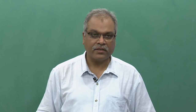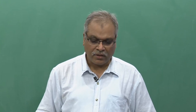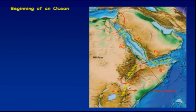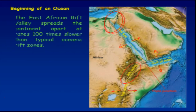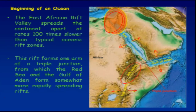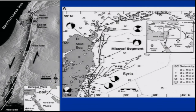Now let us move ahead and talk about what exactly is happening in the Dead Sea region because of the triple junction and the plates moving apart from one another. This is the region which is opening up, creating a huge valley, and because of that you are having the strike-slip motion — a lateral movement taking place particularly because of the differential motion of the plates here.